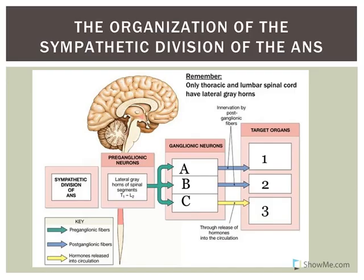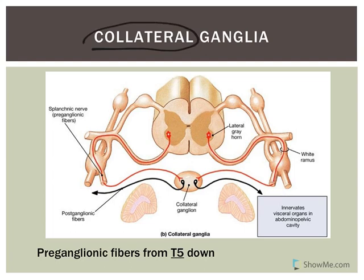Option B involves something referred to as collateral ganglia. Collateral ganglia are unpaired structures that have cell bodies of post-ganglionic neurons, and they innervate structures in the abdominal pelvic cavity. Use your diaphragm as your cutoff: things in body cavities above the diaphragm go to sympathetic trunk; things below will be collateral ganglia.